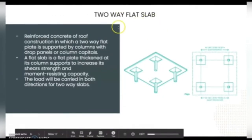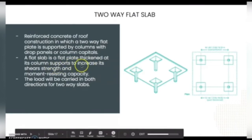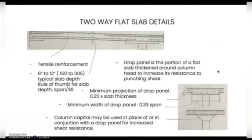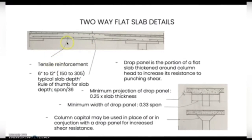Next is the two-way flat slab. It is a reinforced concrete roof construction in which a two-way flat plate is supported by columns with drop panels or column capitals. A flat slab is a flat plate thickened at its column supports to increase its shear strength and moment-resisting capacity. The load will be carried in both directions for two-way slabs. The measurement for this is 6 inches to 12 inches, which is 150 to 305 mm. The rule of thumb for slab depth is span over 36.